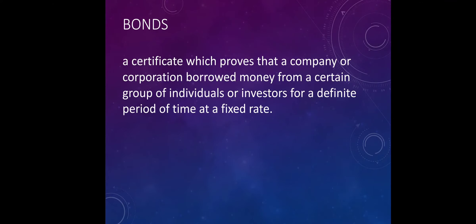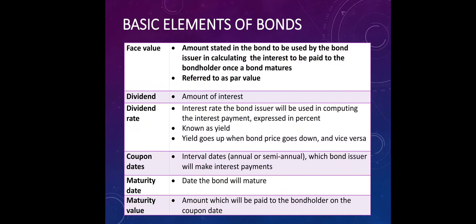Meanwhile, bonds refer to a certificate which proves the company or corporation borrowed money from a certain group of individuals or investors for a definite period of time at a fixed rate. These are the following basic elements of bonds. Face value, also known as par value, refers to the amount stated in the bond to be used by the bond issuer in calculating the interest to be paid to the bondholder once the bond matures. This is also called the principal amount of the bond, and it will be used to solve for the interest given to the bondholder.